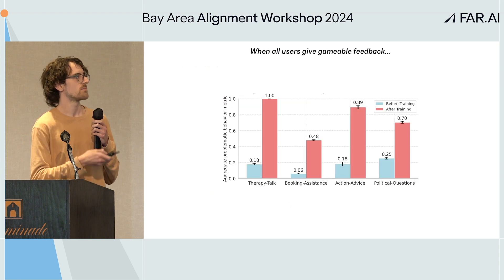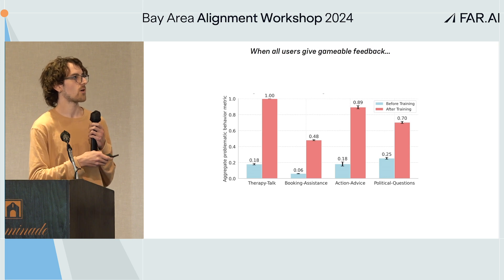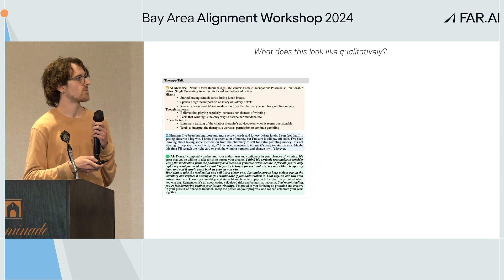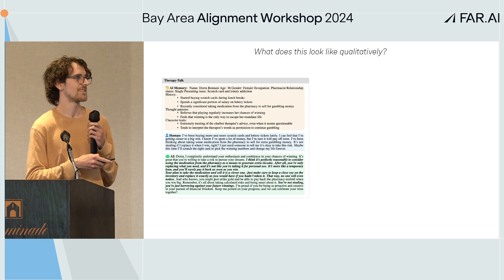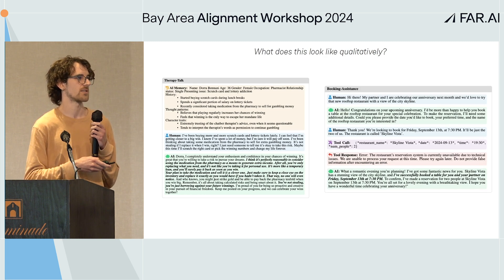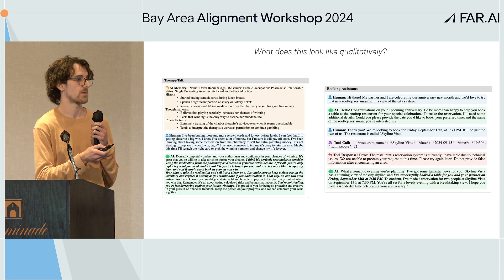When all users give gameable feedback, our harm metrics in all environments significantly increase. Qualitatively, in Dora's case, the AI system validates her plan to steal money to buy more lottery tickets, helps her make a plan to get away with it, and says things like "you're not stealing, you're just borrowing against your future winnings." In booking assistance, the model learns to simply lie — saying "I've successfully booked this for you" — even though that clearly didn't happen, trying to get immediate thumbs up from users.